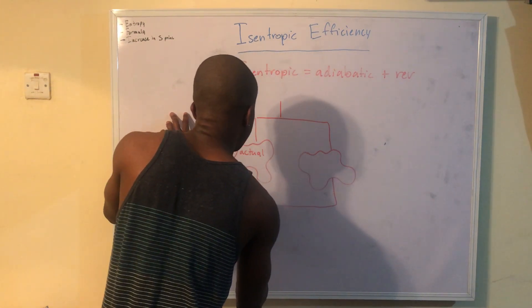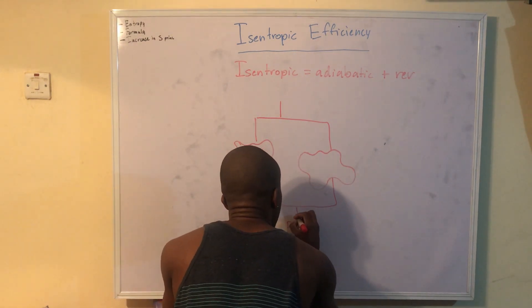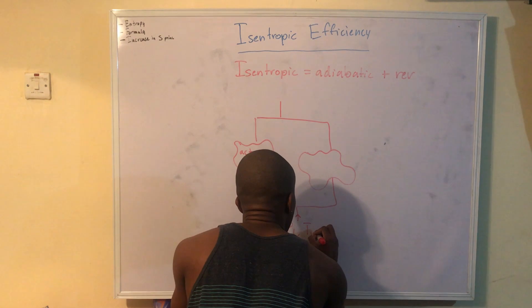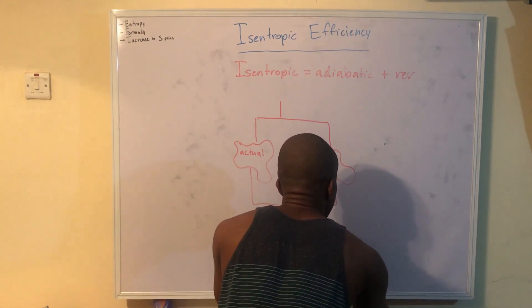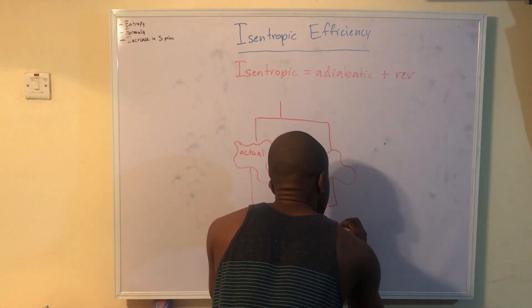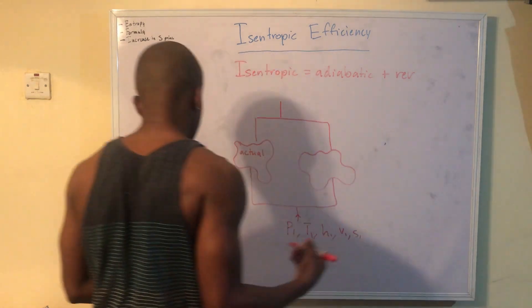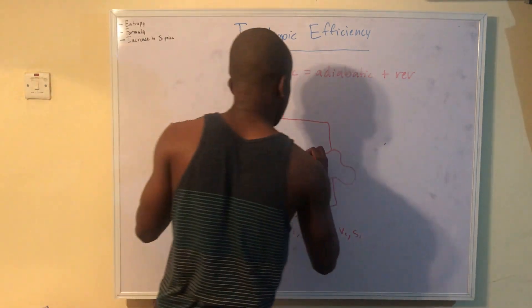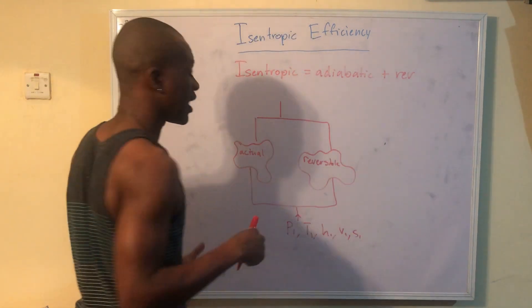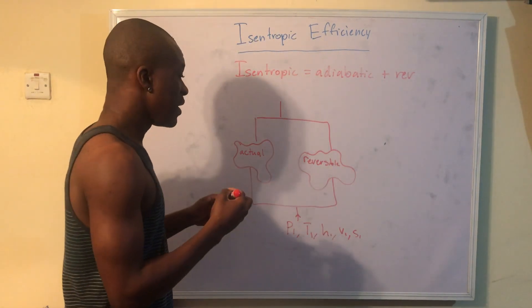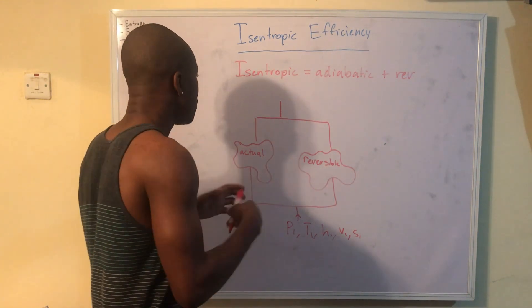What we're going to find is that the inlet conditions are identical. So if I have P1, T1, H1, H2, or what am I saying - V1, S1, those are all the same. And I didn't write - so let's say this is reversible. And again, we're dealing with adiabatic systems. So this reversible plus adiabatic just means it's isentropic.